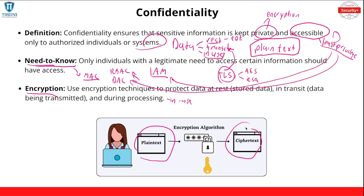And then of course, encryption — using encryption techniques to protect data at rest, in transit, and during processing. Here's a quick picture of how encryption works: plaintext is human readable. Imagine someone sending an email in plaintext — I can wiretap that with Wireshark. But once I apply an encryption algorithm with a secret key, I turn it into ciphertext and now it's protected and confidential. Nobody doing a wiretap or looking at that data in transit can see it.